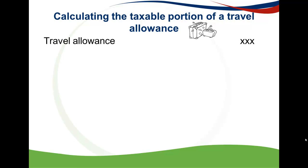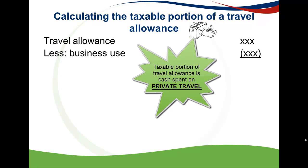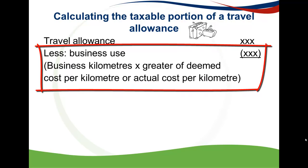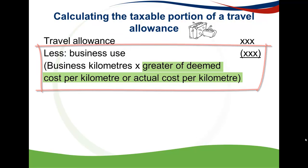The first thing you need to do is calculate the actual travel allowance. This will usually be given as a few thousand Rand per month, so you multiply it by the number of months you received it. From that we deduct the business use. Taking the full travel allowance and deducting the business use leaves us with the private portion, which is the taxable portion. The challenge is calculating the business use — we use business kilometres multiplied by the greater of the deemed cost or actual cost per kilometre.